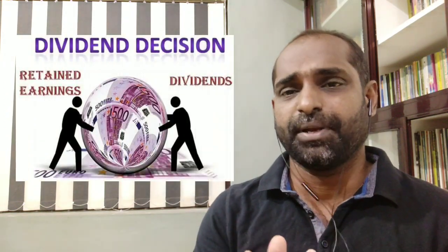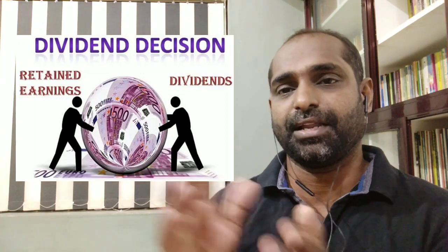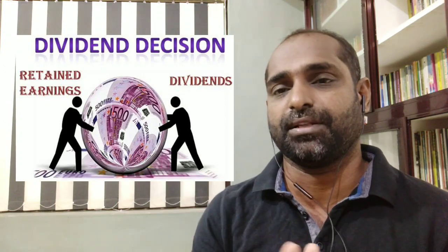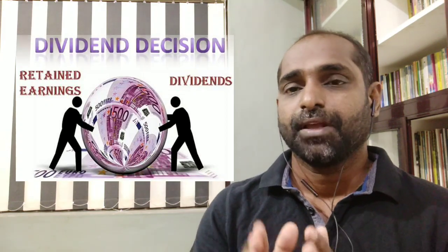The profit is split into two parts: one portion goes toward investment and the other portion is the dividend. This is the essence of the Dividend Decision — deciding how to allocate profit between investment and dividend.